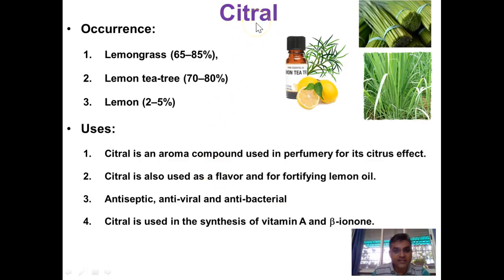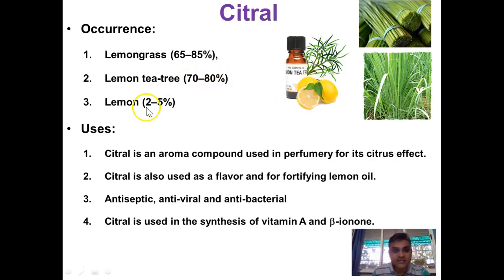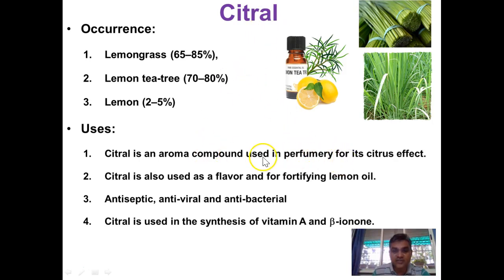First of all, let us see from where we get citral. The major source of citral is lemongrass, where it is present at 65 to 85 percent. The second source is lemon myrtle at 70 to 80 percent. The pleasant smell of lemon is also due to the presence of citral, but its percentage in lemon is very low — only 2 to 5 percent. Because of its pleasant smell, citral is used in the aroma industry for making perfumes.